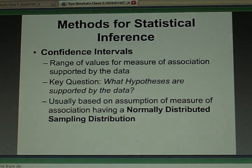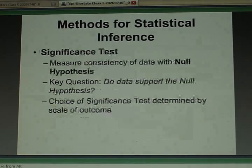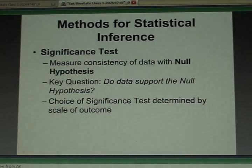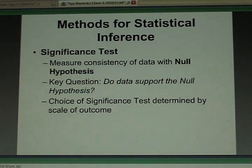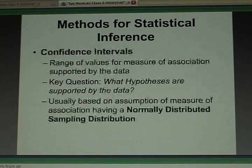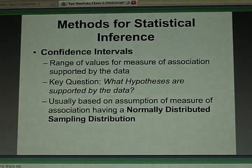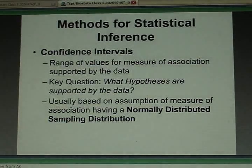So unlike the test of significance, where the key question is do the data support, the confidence interval estimation basically asks what hypotheses are being supported by the data set.